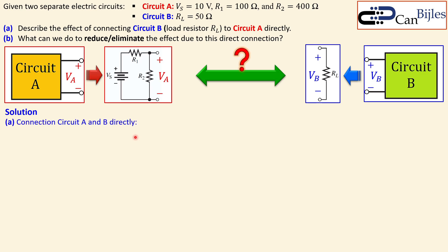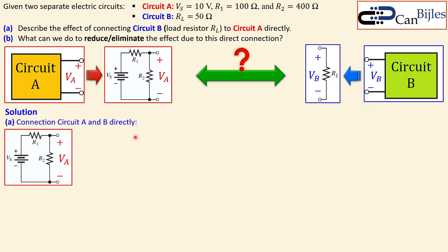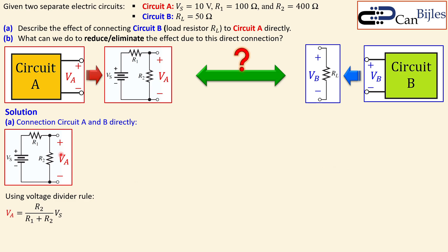Let's look at circuit A just as an independent circuit. Using the voltage divider rule we can say VA equals R2 divided by R1 plus R2, times VS. We know VS and we also know R1 and R2 from the example. Substituting the values: 400 over 500 times 10 gives exactly 8 volts. So independently, circuit A will produce VA of 8 volts.